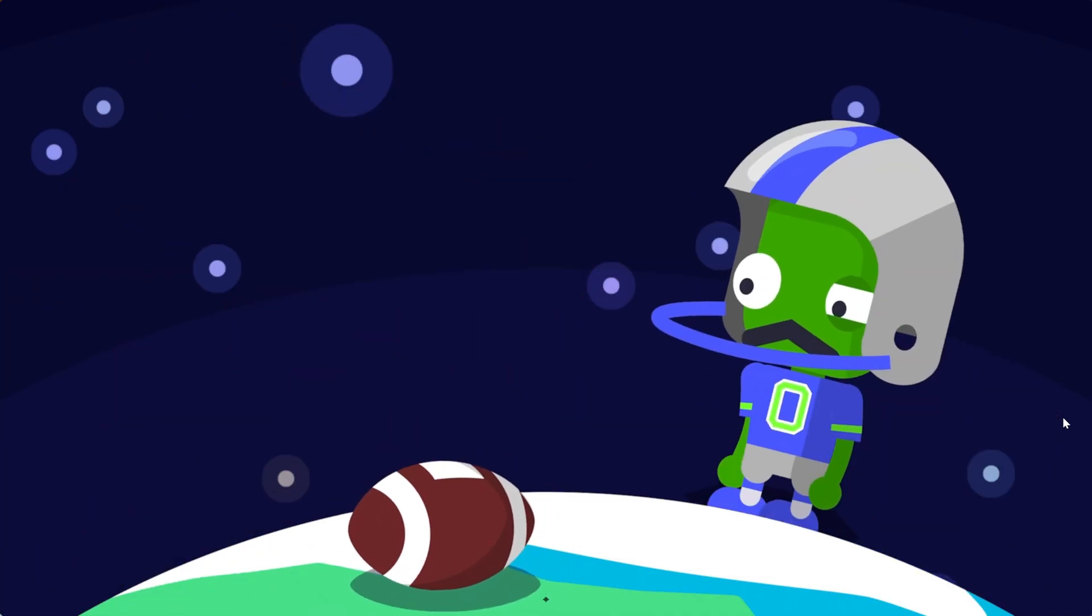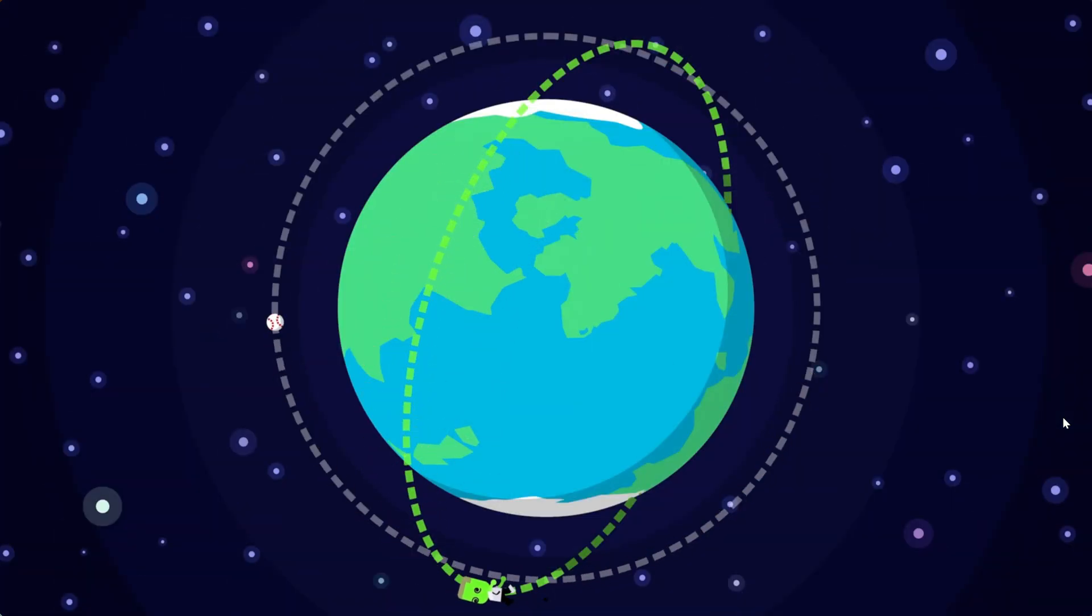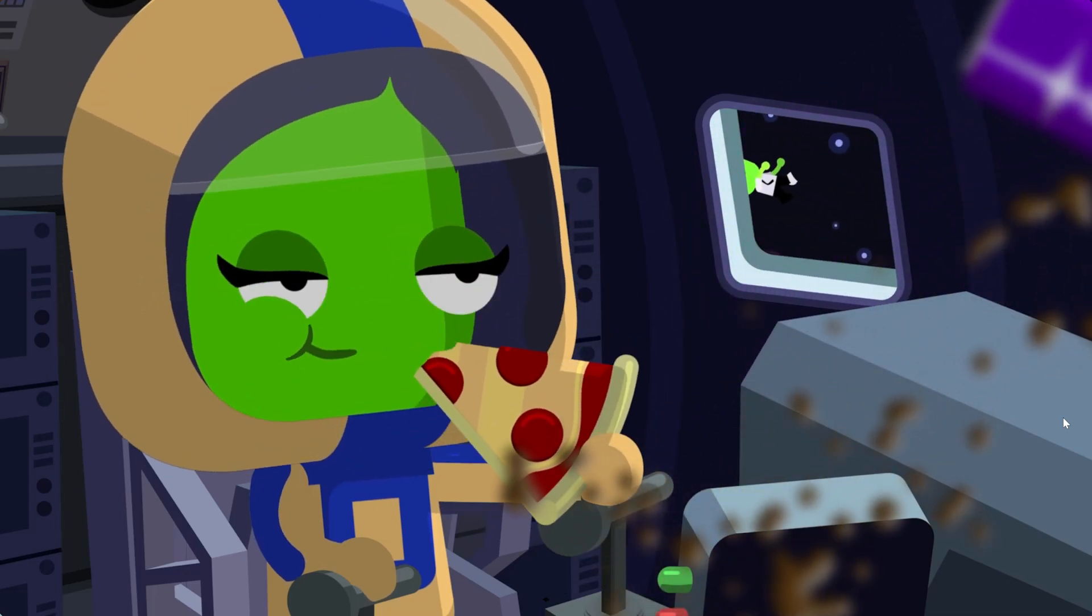As long as that object isn't slowed down by anything, it follows the same path every time it goes around the body it's orbiting, forever. If that object is occupied, it is recommended that they bring lots of snacks.